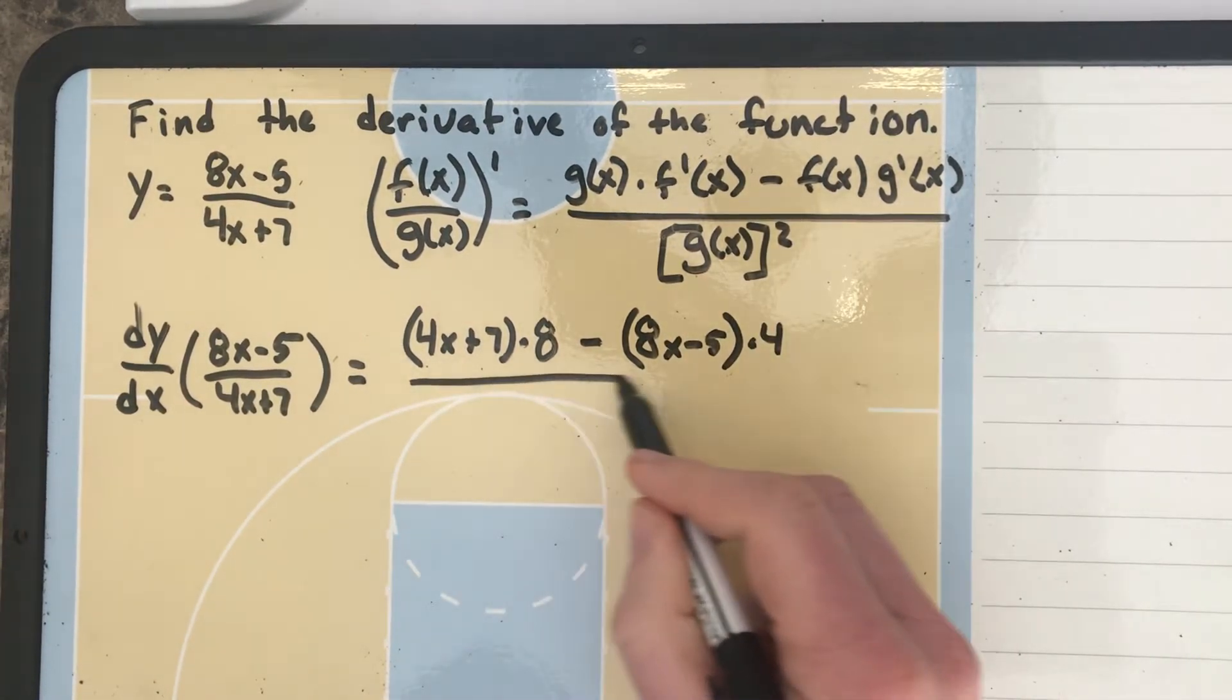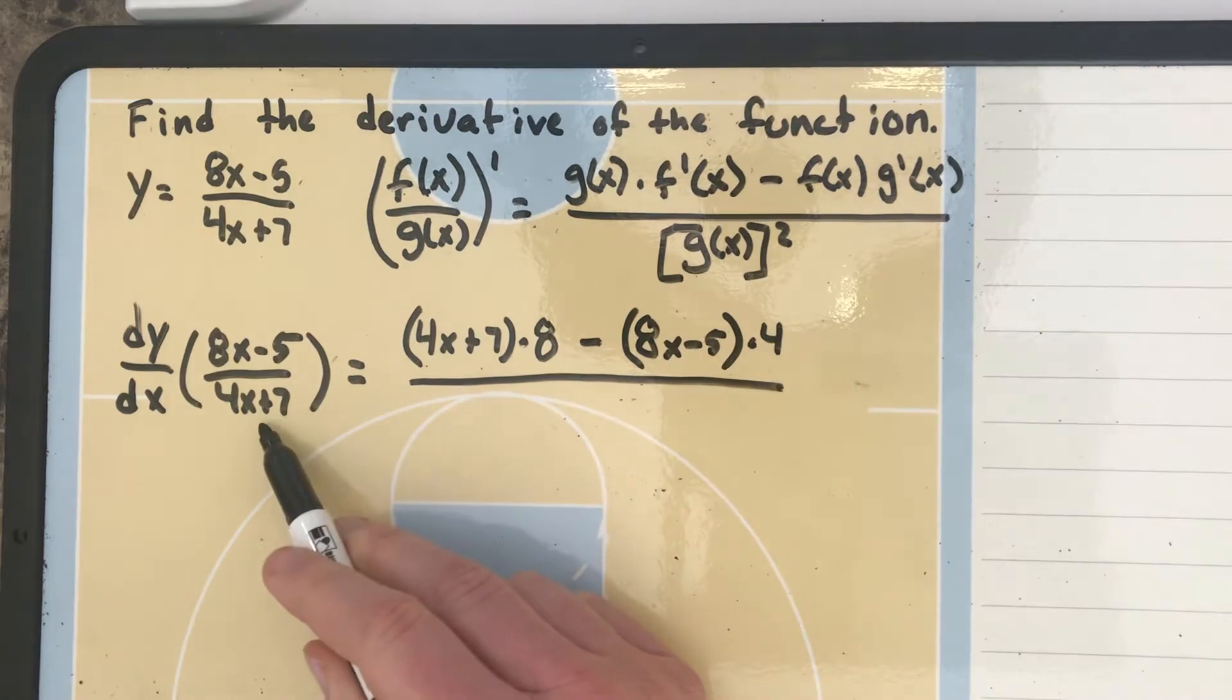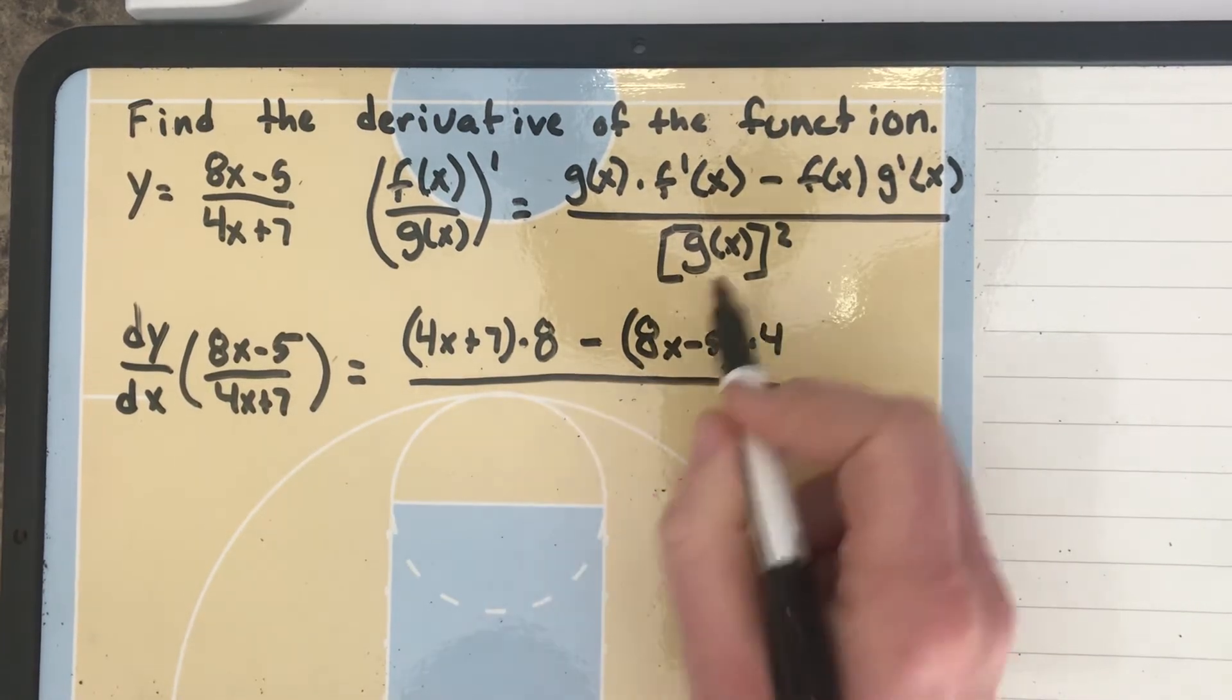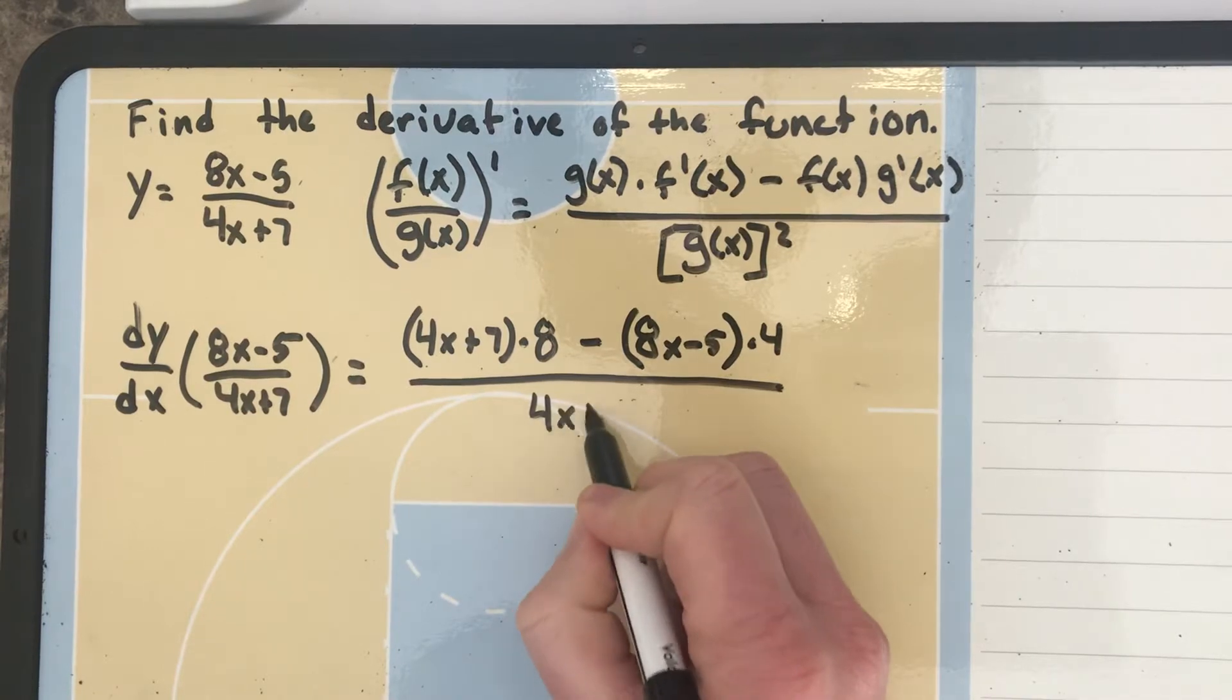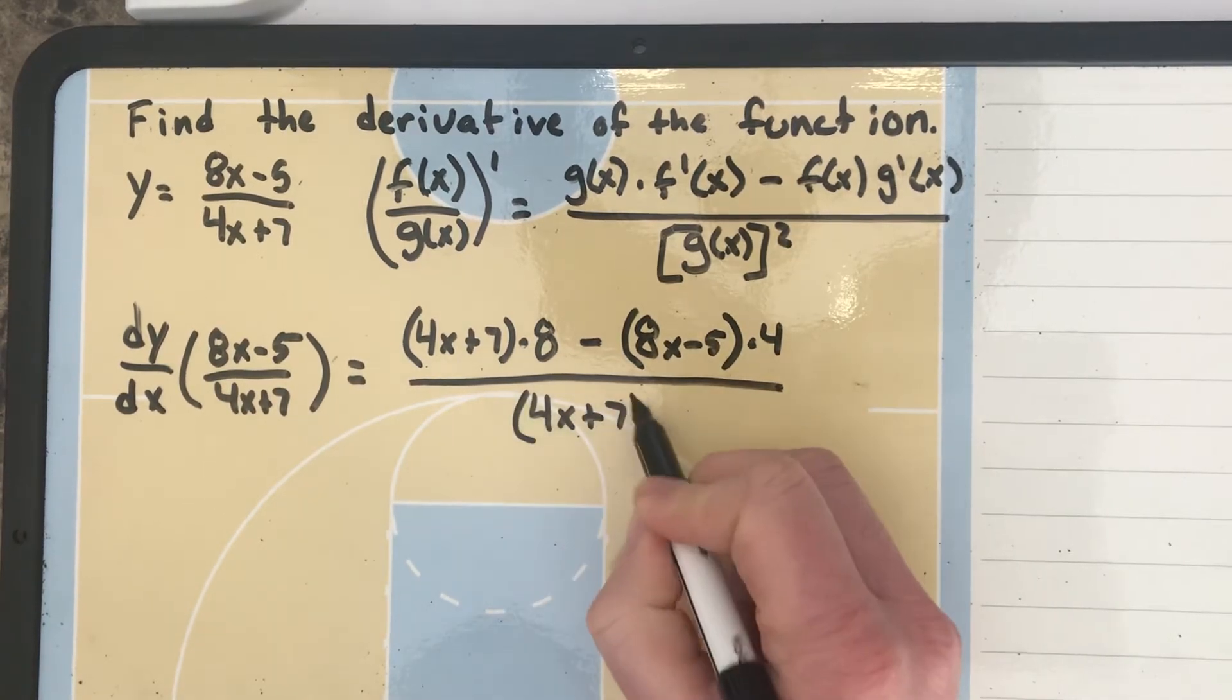And that should all be over the bottom function, 4x plus 7 squared. Right? G of x squared. So 4x plus 7 squared.